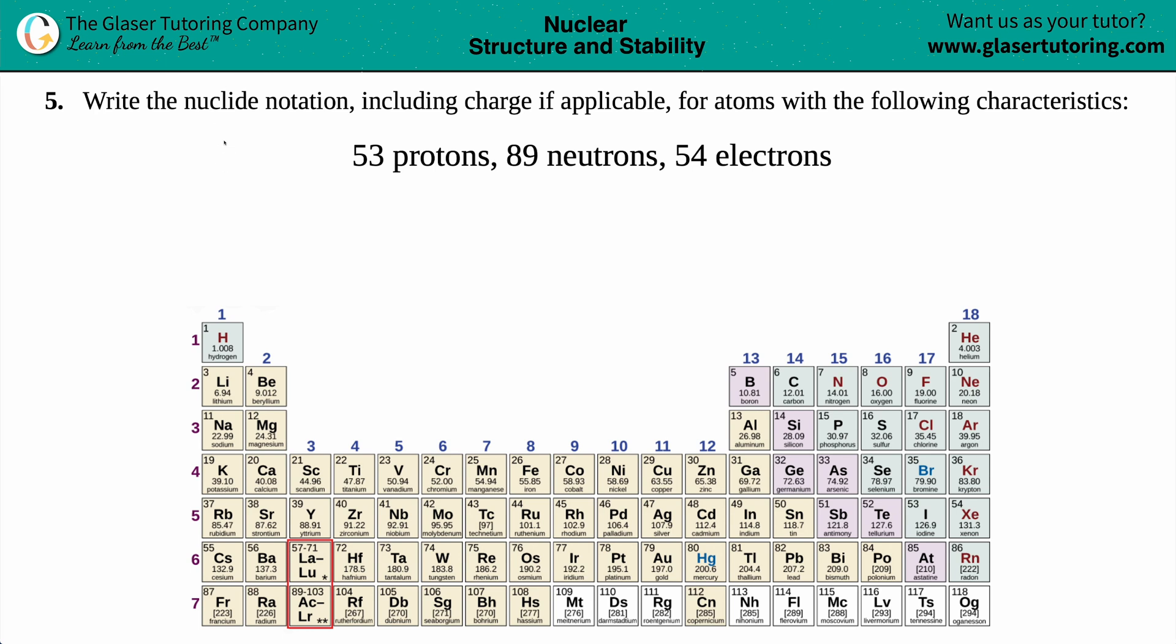Number five, write the nuclide notation, including charge if applicable, for atoms with the following characteristics. So we have to write a nuclide notation for an element who has 53 protons, 89 neutrons, and 54 electrons.